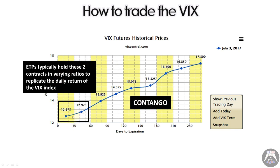Contango is a bad situation for those ETFs or ETNs. You're going to be losing the amount represented by the contango — if it's very steep, you lose a lot; if it's flat, you don't lose much. If it's backwardation, it's positive for you because you're selling at a higher price than the one you're buying as you do your daily rebalancing. SVXY is the opposite because they need to sell those contracts — so everything applies in reverse for SVXY.